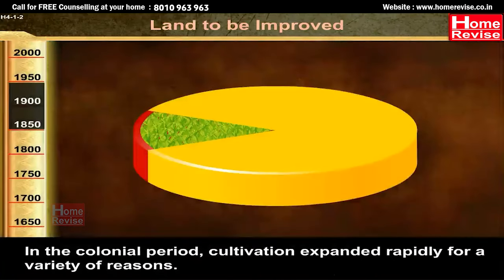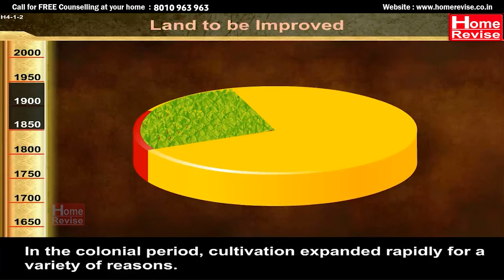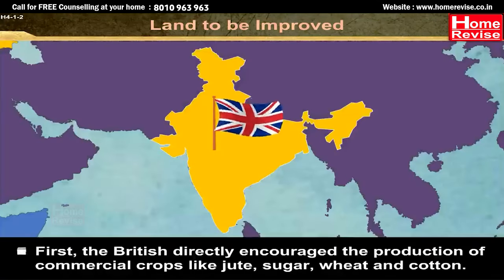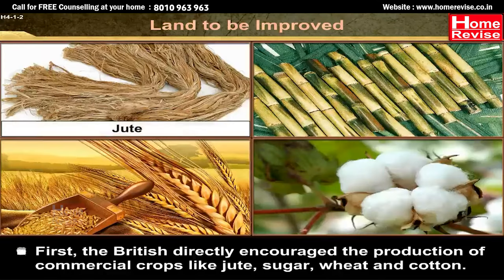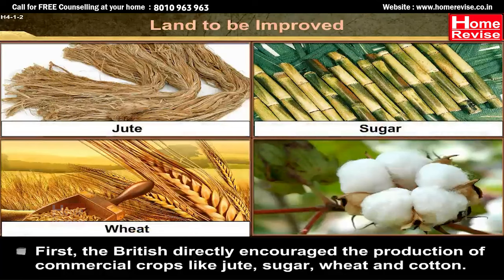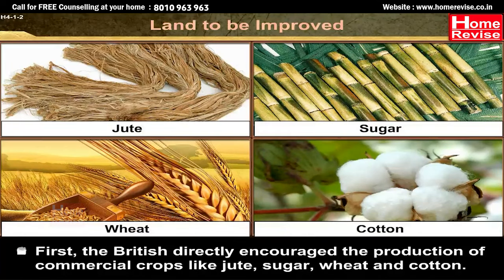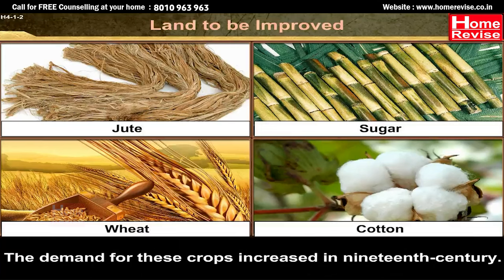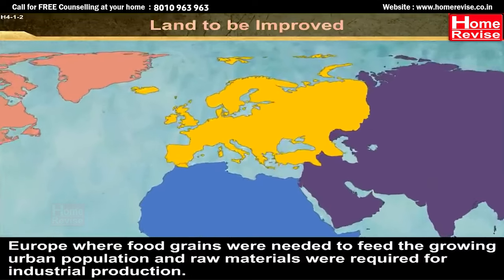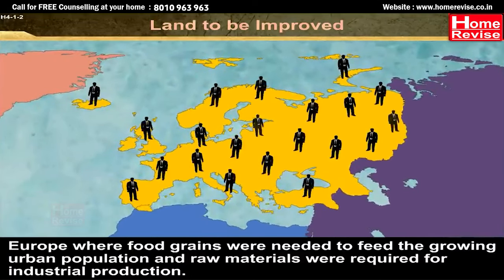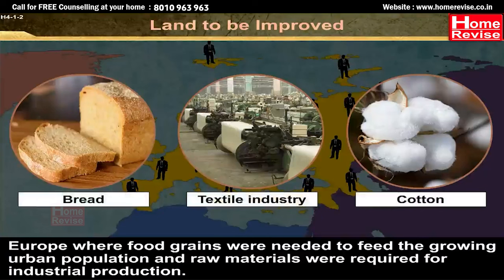In the colonial period, cultivation expanded rapidly for a variety of reasons. First, the British directly encouraged the production of commercial crops like jute, sugar, wheat and cotton. The demand for these crops increased in 19th century Europe, where food grains were needed to feed the growing urban population, and raw materials were required for industrial production.